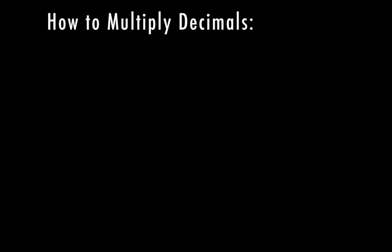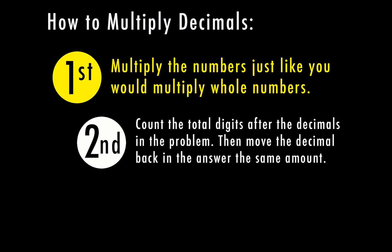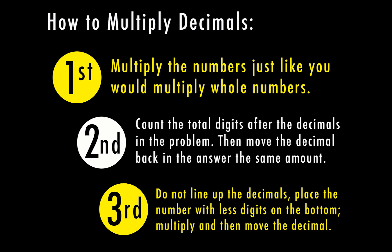Let's go ahead and recap our steps. First, multiply the numbers just like you would multiply whole numbers — don't worry about the decimal, just find the number answer. Then count the total digits after the decimal in the problem, take that total number, and move the decimal back in the answer the same amount. And to make it easier on yourself, don't line up the decimals — place the number with fewer digits on the bottom, multiply, and then move your decimal.